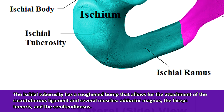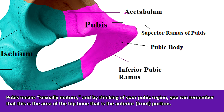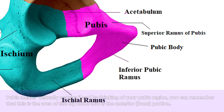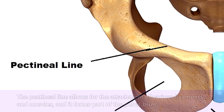The last major section of the hip bone is the pubis. The word pubis means sexually mature, and by thinking of your pubic region you can remember that this is the area on the anterior or front side of the hip bone. Like the ischium and ilium, the pubis also has a body, but it also has two rami coming off the body which allow for the attachment of various muscles and ligaments. The superior ramus is the upper portion that branches out, and there is a ridge on its superior border called the pectineal line, which allows for the attachment of various muscles and ligaments.